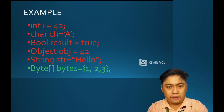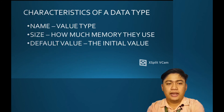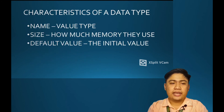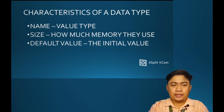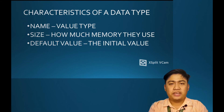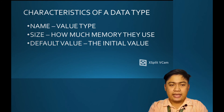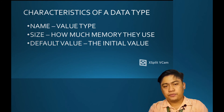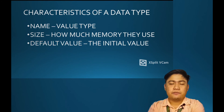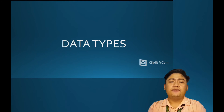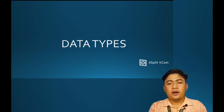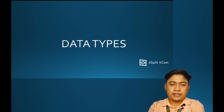There are three characteristics of a data type: name, size, and default value. Now let's proceed with the different types of data types.